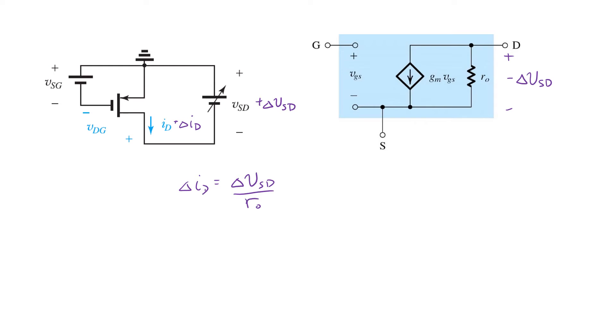And that's exactly what we see using the small signal model on the right, which is the same small signal model we used for the NMOS transistor. Negative voltage applied across R0 is going to result in an extra increment of current flowing this way out the drain, just as we expect from our intuition on the left. And that's indeed the extra current, delta ID, which is equal to delta VSD over R0. So again, the same small signal model is applicable to the PMOS transistor as we use for the NMOS transistor.